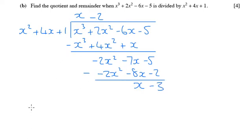So this is the quotient here. The quotient is the one at the top, x - 2. And the remainder is x - 3.